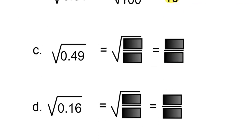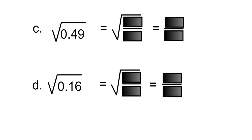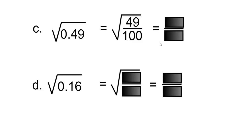What is the square root of 0.49? The last digit, which is a 9, is in the 100s column, therefore it's out of 100. The 49 will be your numerator. The square root of 49 is 7, and the square root of 100 is 10, so the answer is 7 over 10.